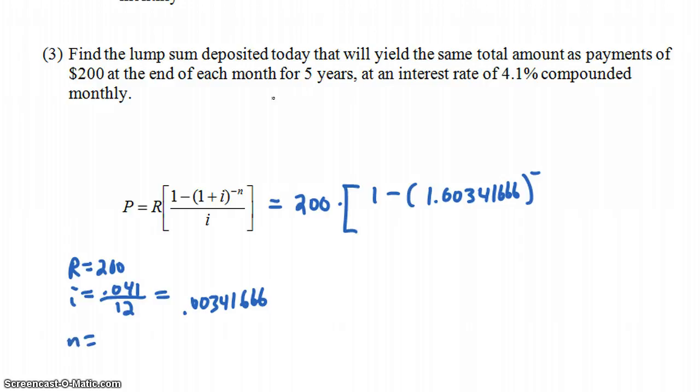Oh, what was N? N, it's not 5, right? You're making monthly payments for 5 years, so it's really 12 times 5, right? You're making 60 payments, so the N is 60. So, you have negative 60 up here. And then you're going to divide by I, so that's just 0.00341666.